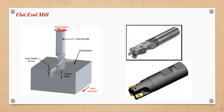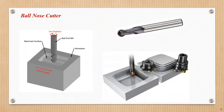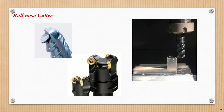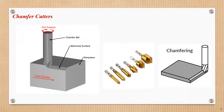Next is flat end mill. Ball nose is made with a corner radius. Next is bull nose — the corner is made by a radius. Next is chamfer — chamfer is made at 90 degrees and the front end mill is made with corners. This is a chamfer operation.